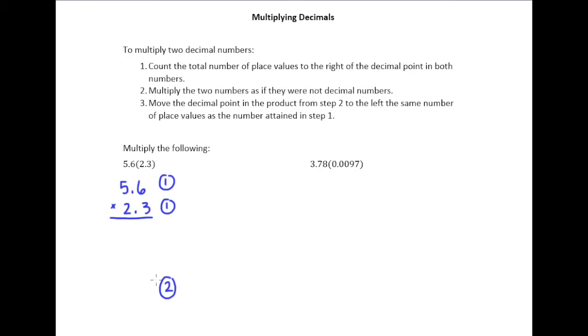Step number two says multiply the two numbers as if they were not decimal numbers. In other words, pretend like instead of 5.6 times 2.3, pretend it's 56 times 23.